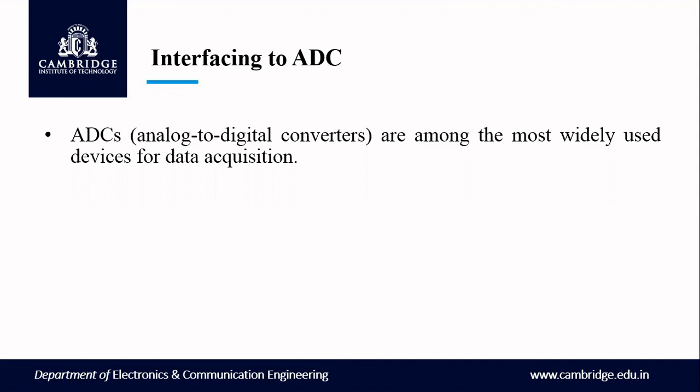Our digital computers do processing with zeros and ones. Whenever we want to process analog signal parameters, we can't handle analog signals as they are, so we need to convert them into digital. Then digital values — either 0 or 1 — will represent the information, so that digital computers can be used for processing. For that purpose, we are going to use analog to digital converters.